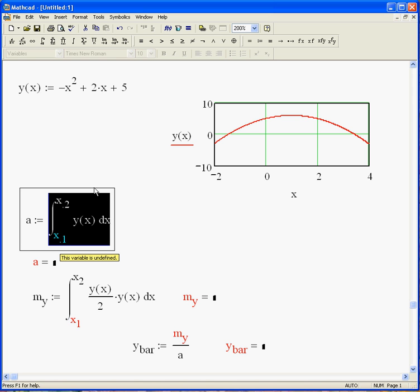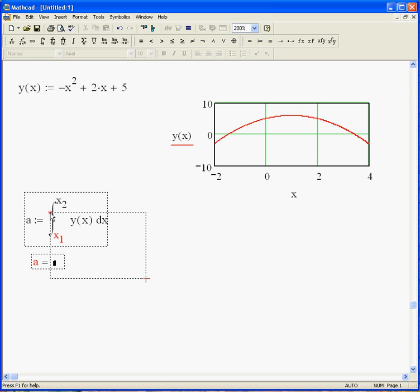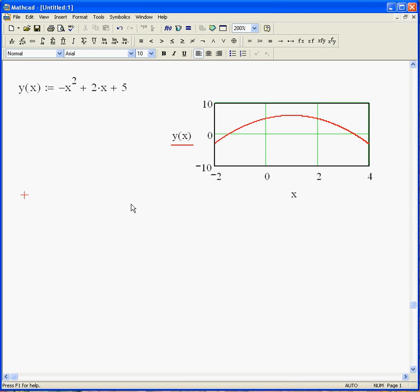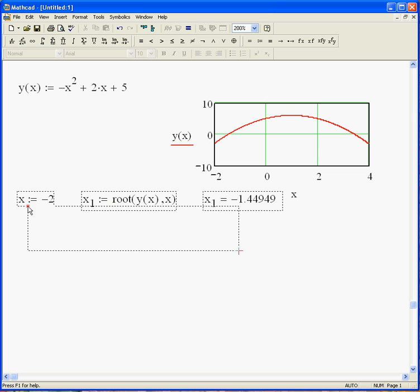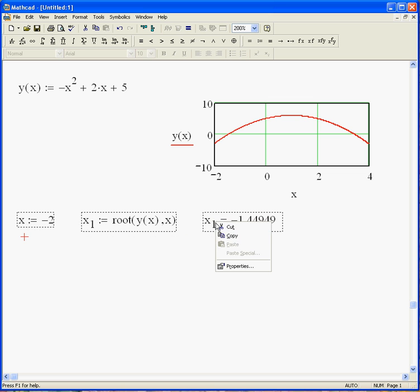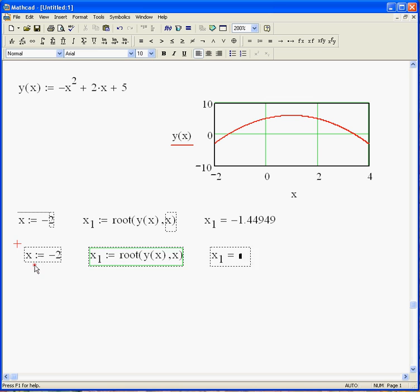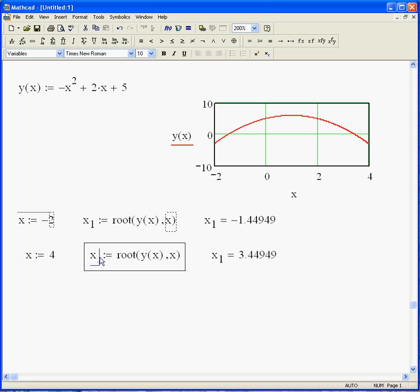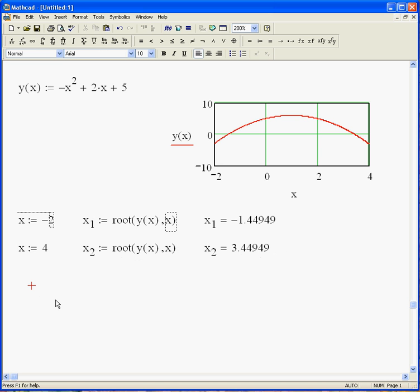So now I need to know where x1 and x2 are. Well, let's define x1 as the root of y of x, and I'm interested in x. And there's x1. Now, if I want to find x2, I need to change my initial guess, and let's make that 4, and we'll make that x2. So now I know what the integration limits are going to be.